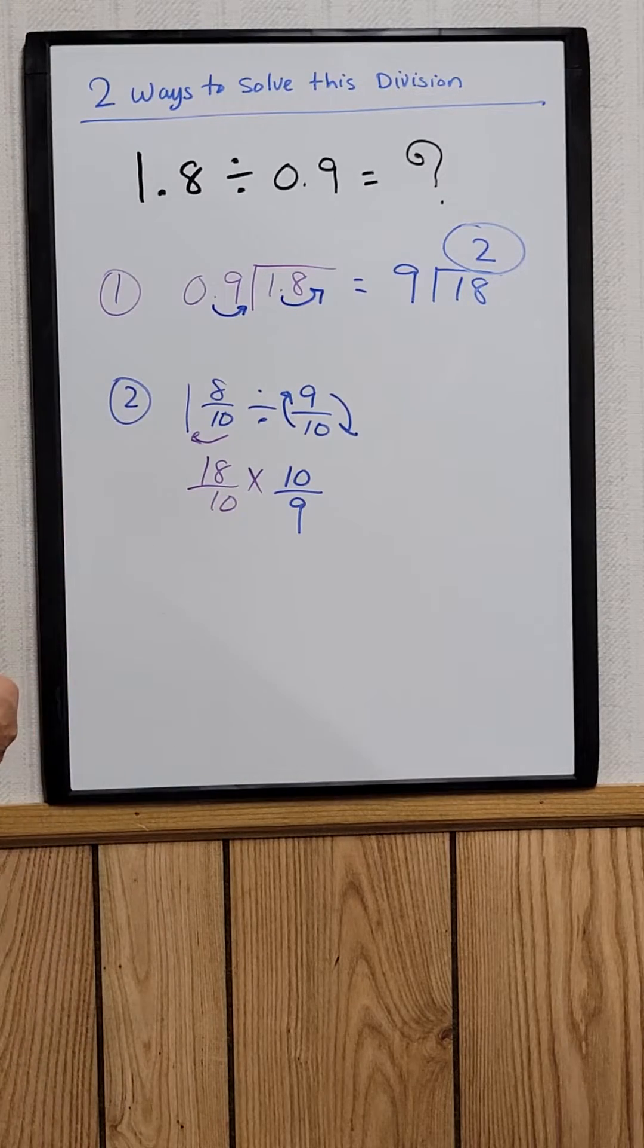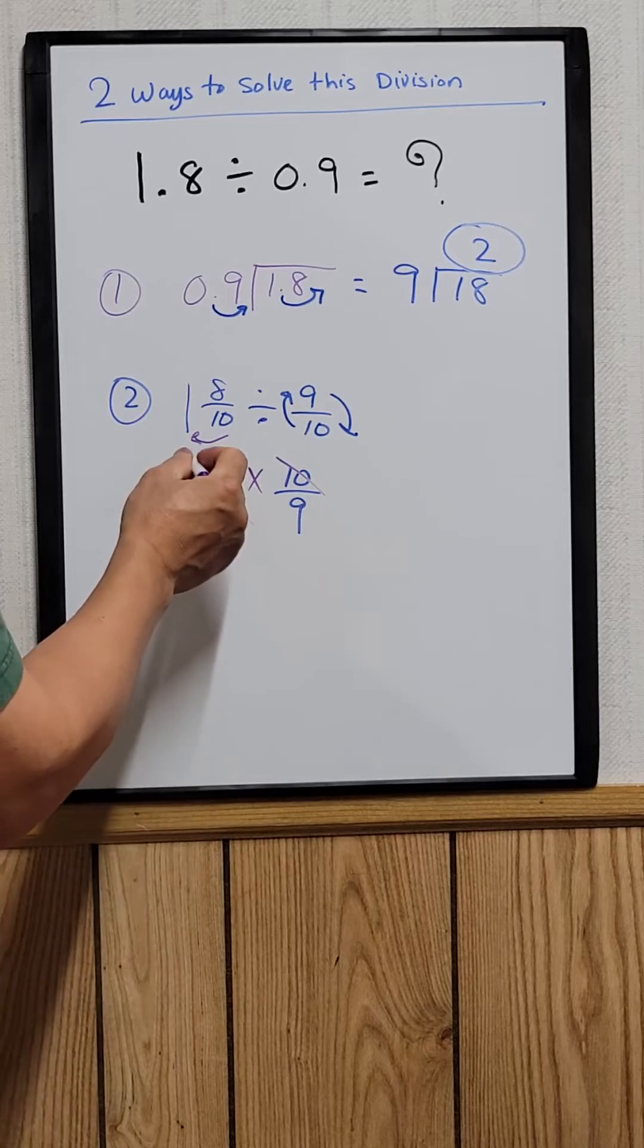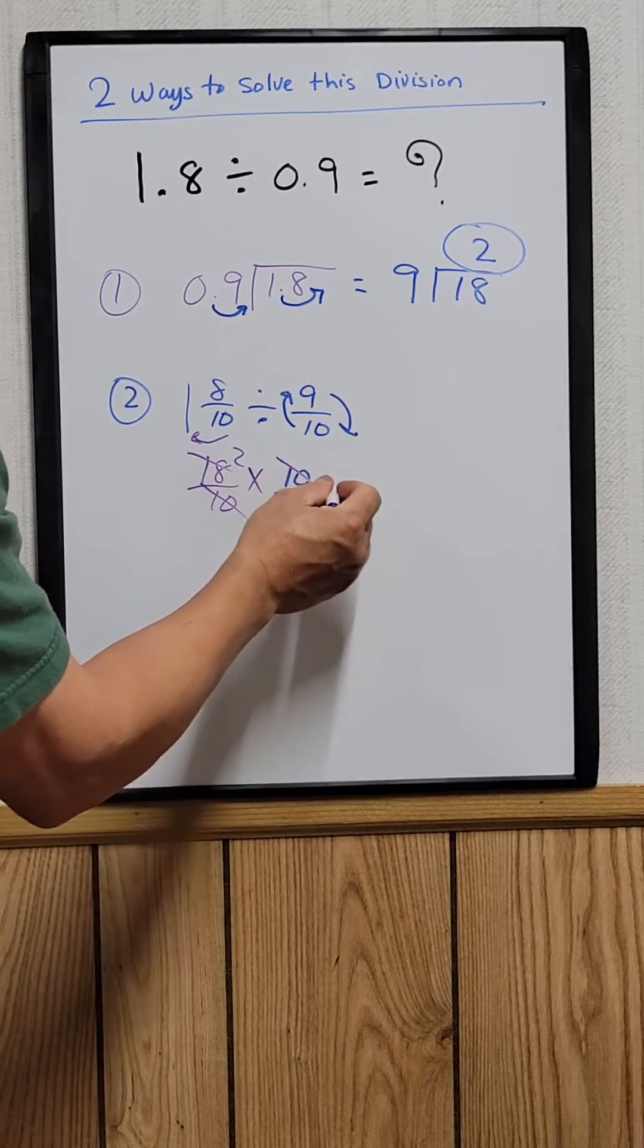And then 10 cancels out. 18 and 9 would be 2. So the answer is 2.